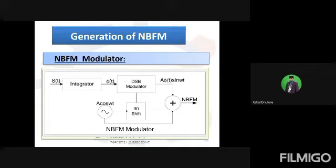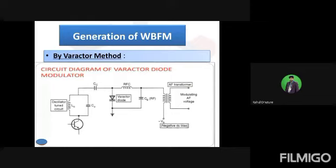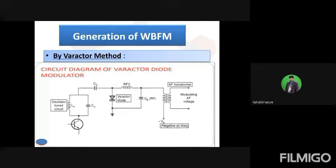When we have to generate narrowband FM, we use a voltage controlled oscillator and the varactor diode. When we have to generate wideband FM, that time we use the direct method and indirect method. This type of question will be asked in your examination: explain in detail narrowband FM and wideband FM, or explain in detail the direct and indirect method for generating wideband FM.